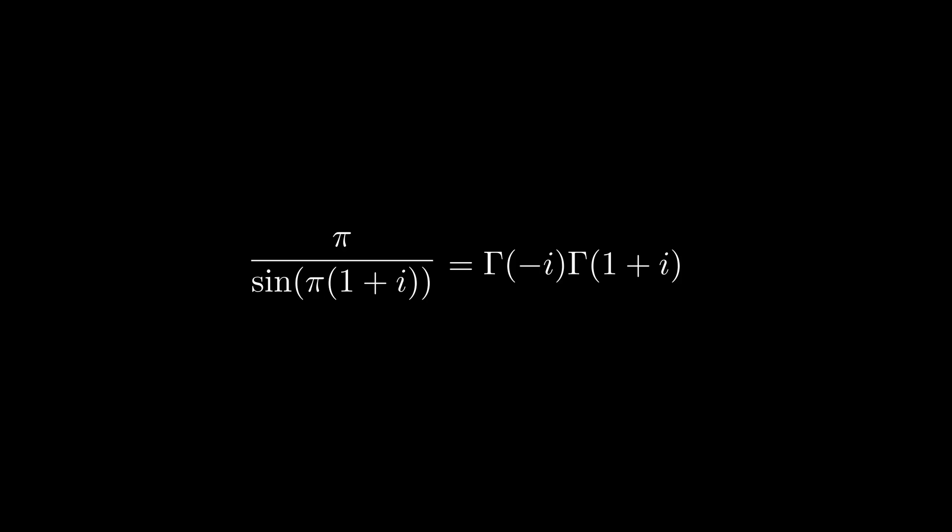Here's where it gets just slightly tricky. Gamma of negative i, that's the same thing as gamma of i conjugate. If you think about what the conjugate is, it's just negating the imaginary part of a complex number. So, 0 plus i conjugate would just be negative i. And we said that gamma of z conjugate is the same as the conjugate of gamma z.